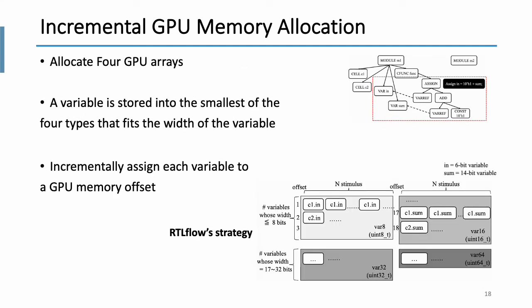To address this issue, we allocate four GPU arrays, 8-bit, 16-bit, 32-bit, and 64-bit arrays, to store our variables. And the variable is stored into the smallest of the four types that fits the width of the variable. So as shown in the figure on the bottom here, because the width of sum is between 9 and 16-bit, we use 16-bit array to store c1.sum and c2.sum. Similarly, we use 8-bit array to store c1.in and c2.in. To handle n stimulus, we duplicate one variable per cell n times in the corresponding array. So here we have offset to indicate GPU's memory allocation, and that's what we call incremental GPU memory allocation.